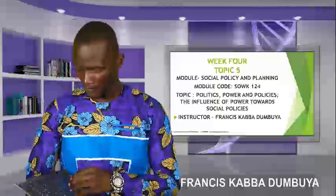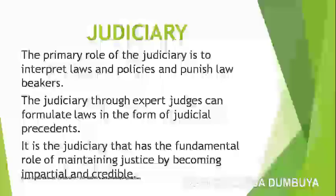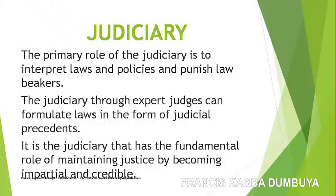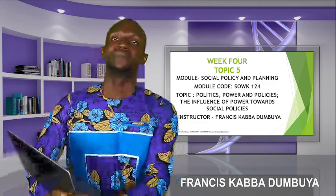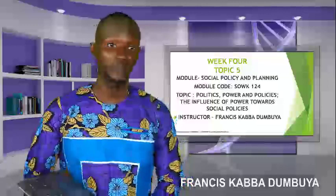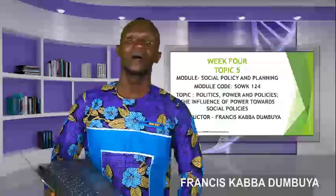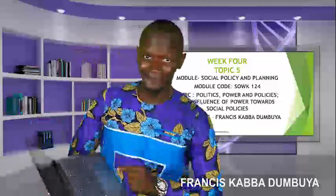The primary role of the judiciary is to interpret laws and policies and to punish lawbreakers. For example, if parliament has passed a policy stating that those who commit rape should be sentenced to 15 years in prison, and someone is taken to court, the responsibility of the judiciary is to look at that provision and interpret it, concluding that according to the law the person is liable to 15 years in prison. They interpret the law and hand the case over to the prison officer. That is how people are sentenced.